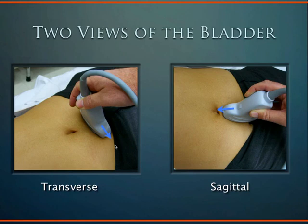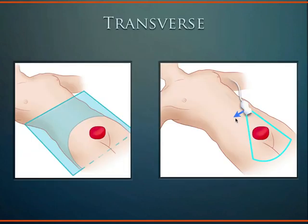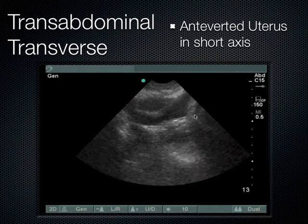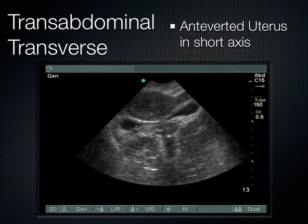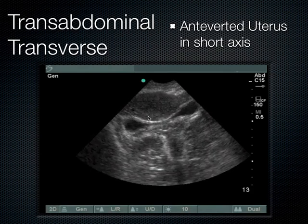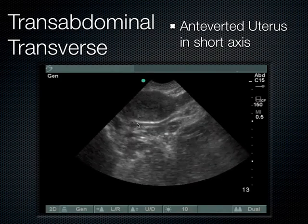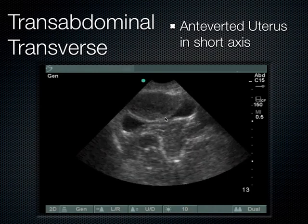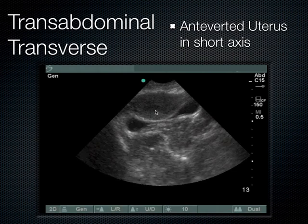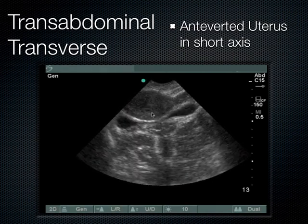For bladder scanning: transverse view has the indicator to the patient's right; sagittal view has the indicator toward the patient's head. In a female pelvis with a distended bladder, the bladder pushes the uterus posteriorly. When the bladder is nearly empty, the uterus sits on top of the bladder in an anteverted position — the fundus wraps back toward the bladder, which can look unusual at first. The vaginal stripe and fundus are visible in this configuration.